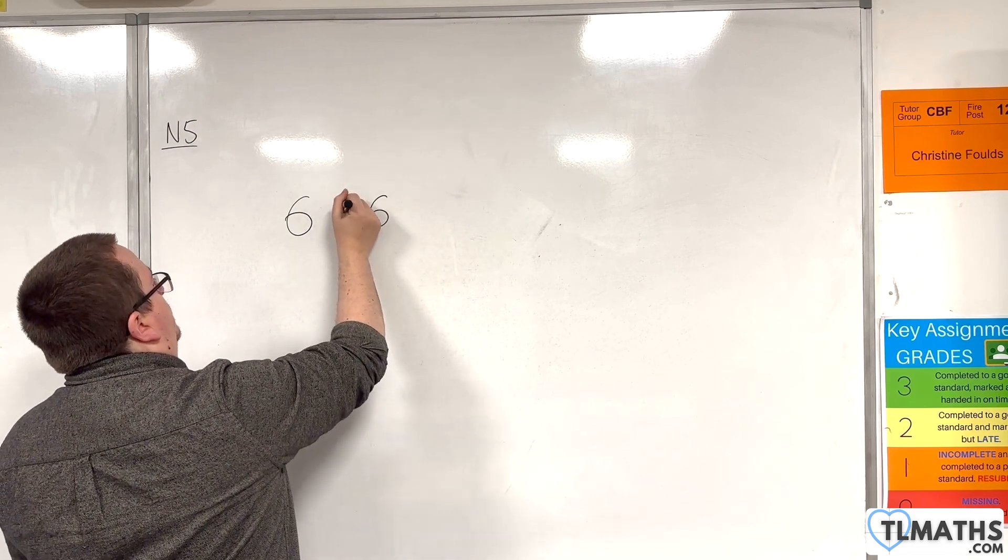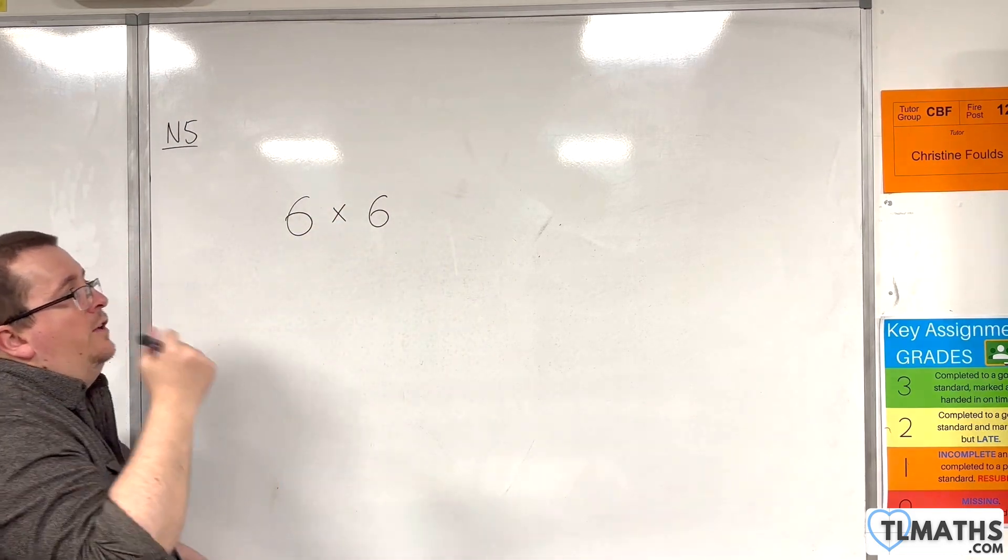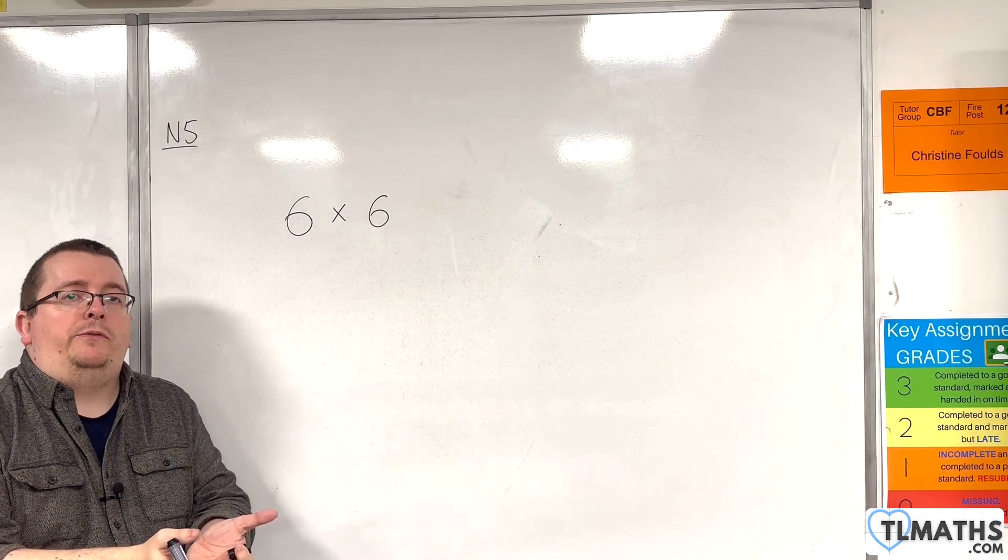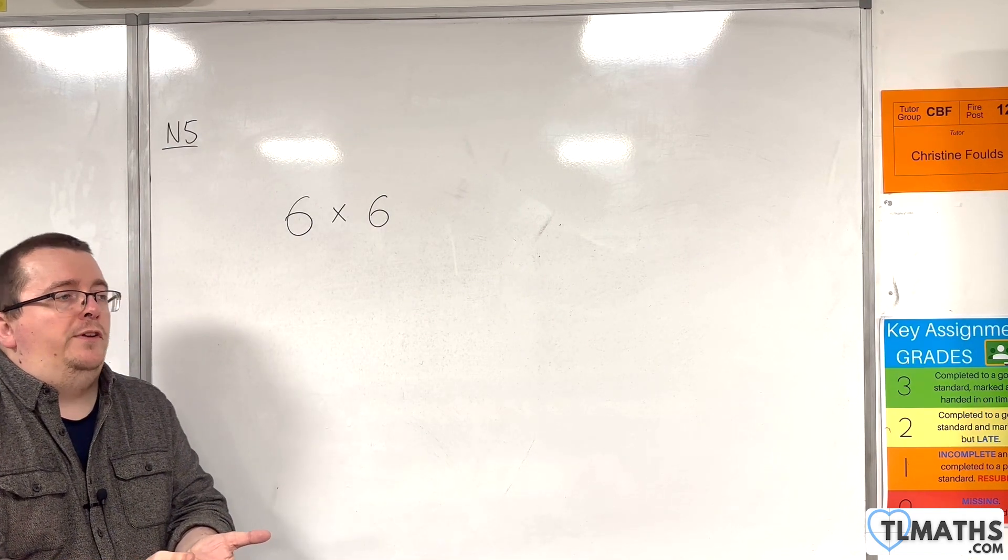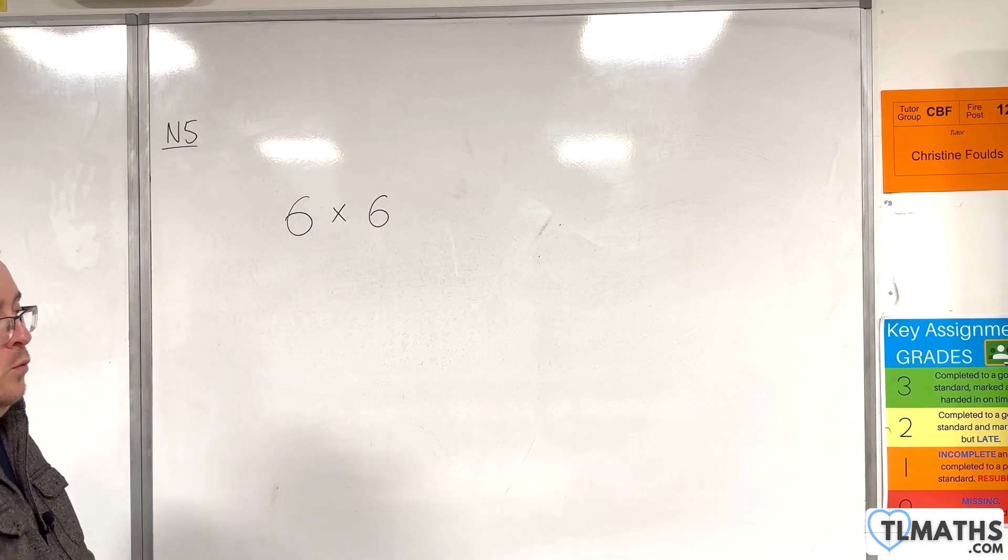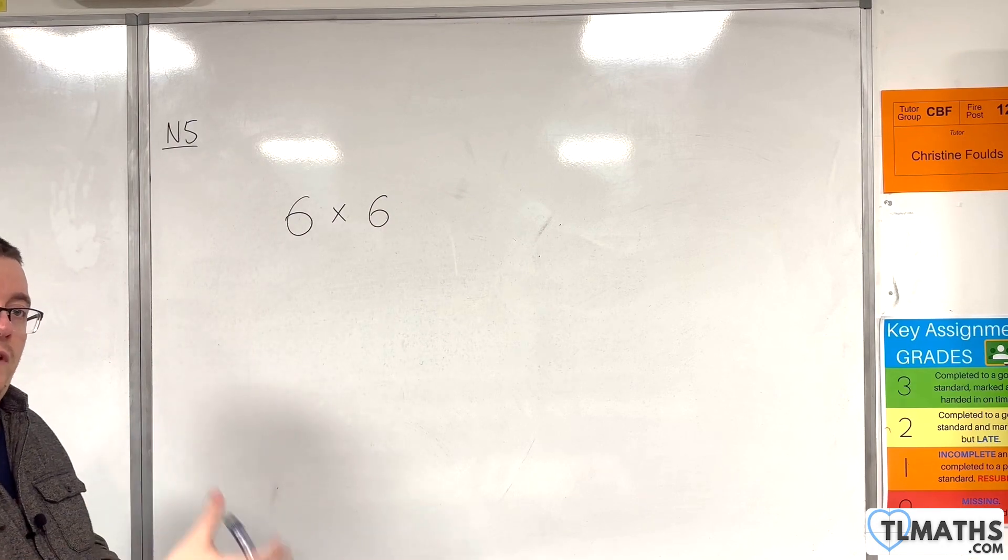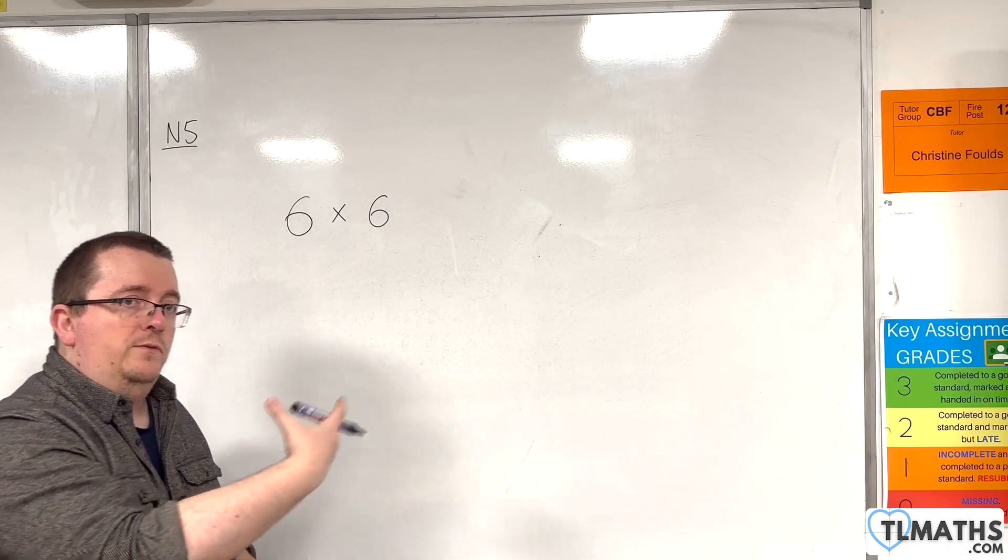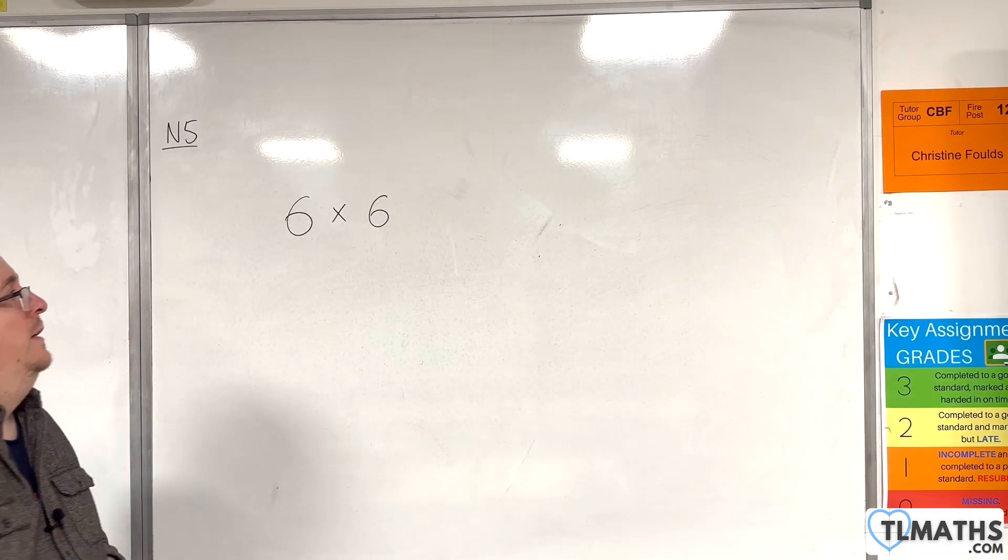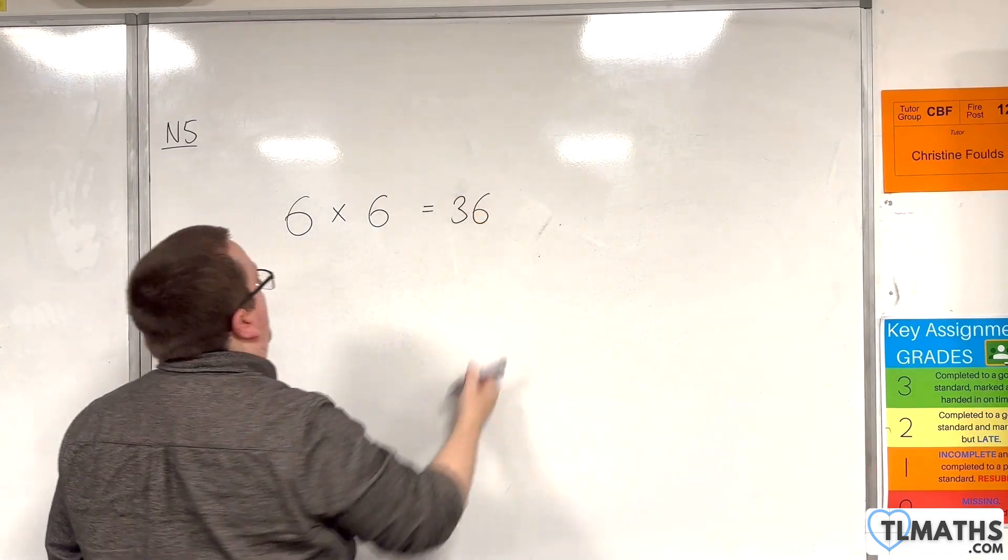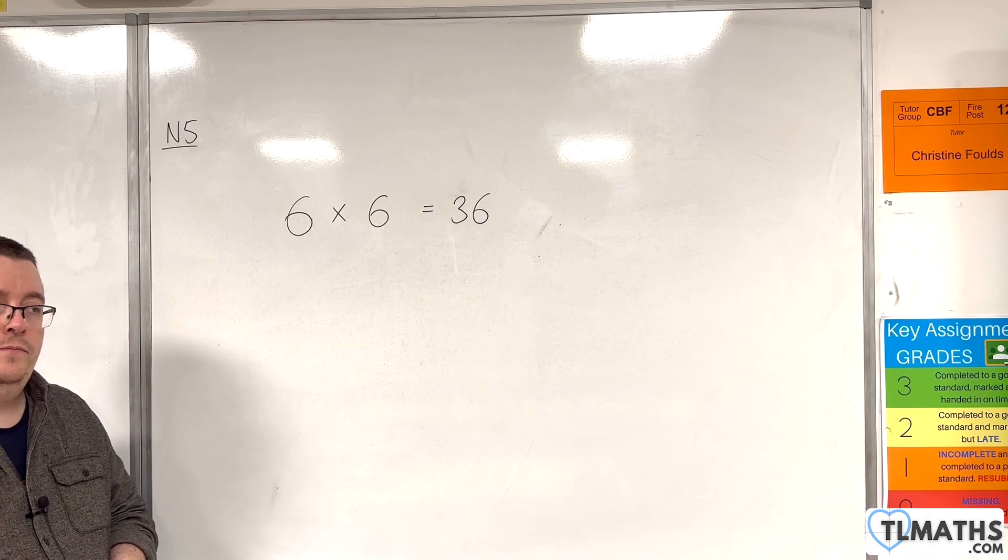And so, in total, there are going to be six times six possible combinations of scores. So, that includes a one and then a one, a one and then a two, a one and a three, a one and a four, one and a five, one and a six, two and a one, two and a two, two and a three, two and a four, etc. And so, there are 36 possible options altogether.